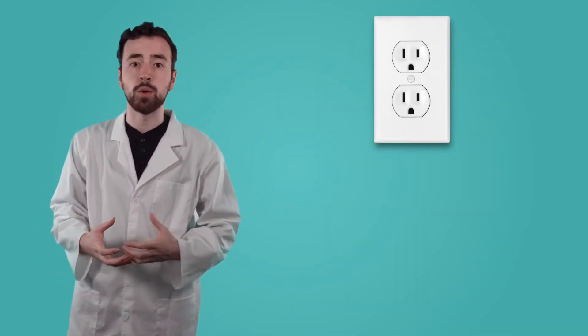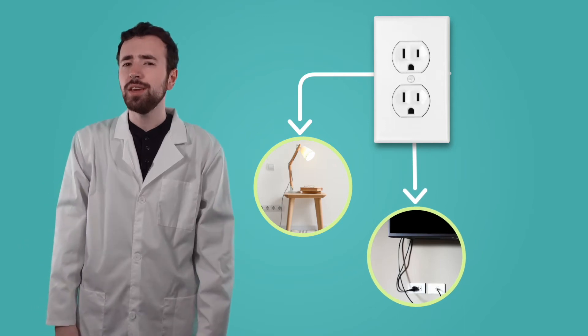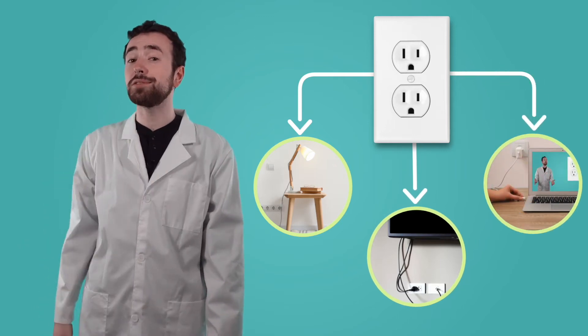When we harness that flow of energy, we're able to transport electricity to the outlets in our homes. Powering our lights, running our TVs, even charging the device you're using to listen to me talk about electricity. The reason electricity is so commonly used to power whole houses, neighborhoods, and cities is because it can be efficiently transported between places.